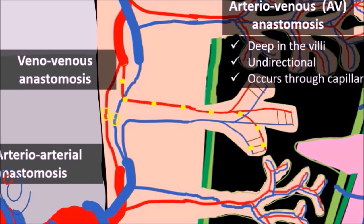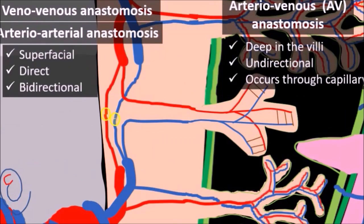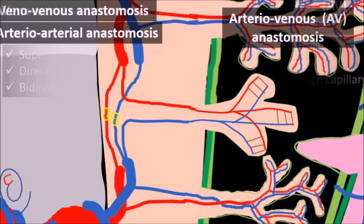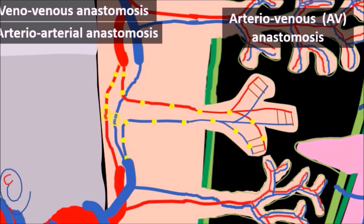So deoxygenated blood inside the artery will be shifted to the other twin as oxygenated blood inside the vein. On the other side, arterioarterial and venovenous anastomoses are superficial — they occur superficially on the fetal surface of the placenta. They are direct anastomoses occurring without a capillary bed connection, and they are bidirectional, meaning blood can move from twin A to twin B or in the opposite direction from twin B to twin A. This type of vascular pattern is called balanced vascular anastomosis, because blood shift from one twin to the other through the deep arteriovenous anastomosis is balanced by blood flow in the opposite direction through the superficial arterioarterial or venovenous anastomosis.